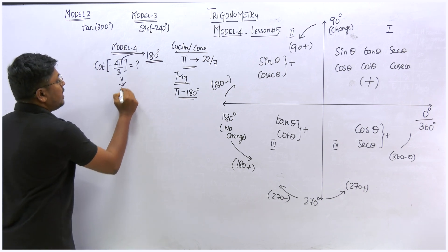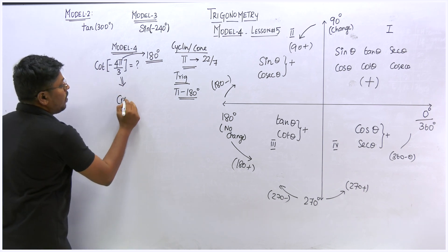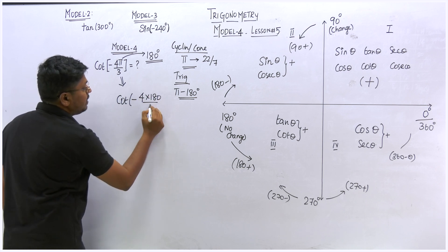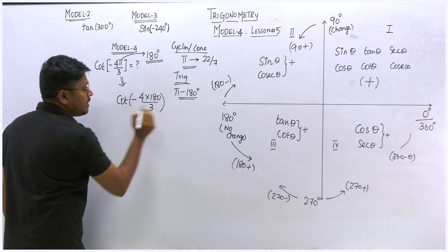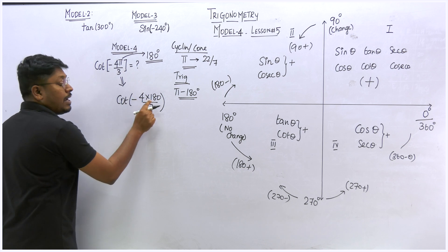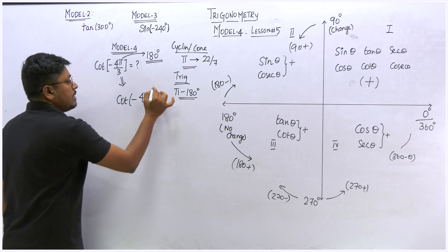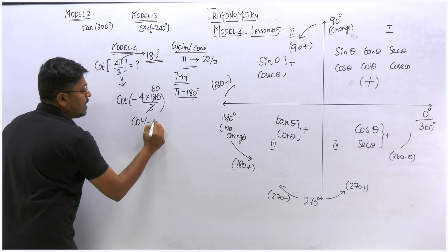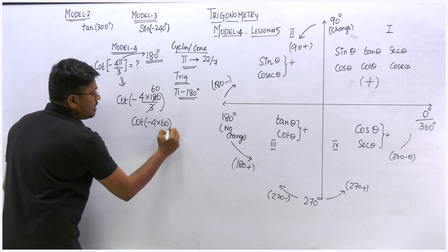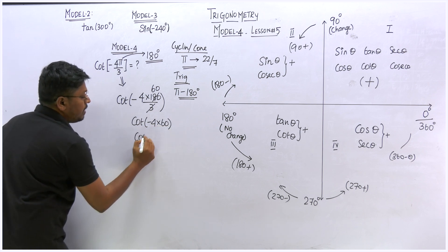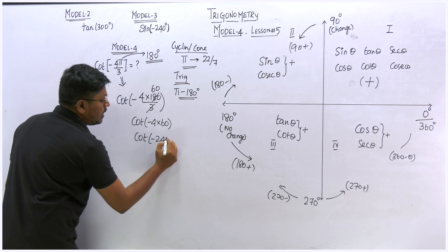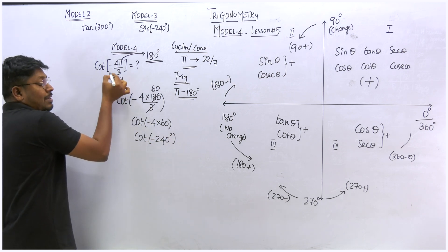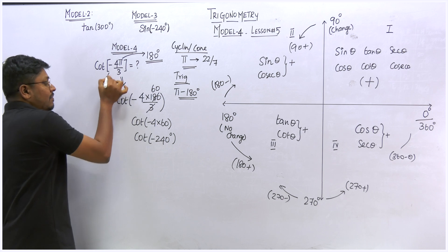Instead of learning a new formula, just do a simple conversion. Rewrite cot of minus 4 pi by 3 by replacing pi with 180: that gives cot of minus 4 times 180 divided by 3. Cancel to get 60, so this becomes cot of minus 240 degrees. The pi question is now converted into a normal degree expression.